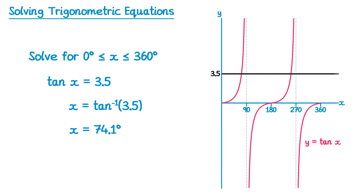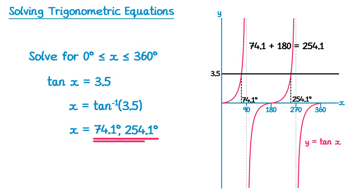We draw a horizontal line at 3.5 and get two solutions. One of those is our 74.1 — that's the left-hand solution — and we need to find the right-hand solution. Tan is actually quite nice because it repeats every 180 degrees, not 360. So we just add 180 to 74.1 to get the next solution. So 74.1 plus 180 is 254.1. So our two solutions are 74.1 and 254.1 degrees.